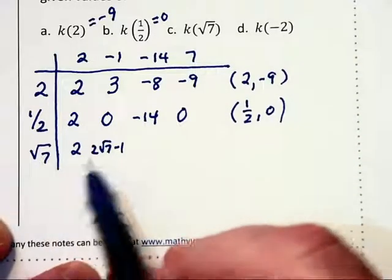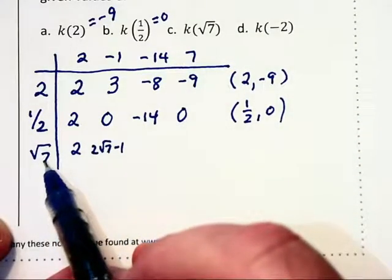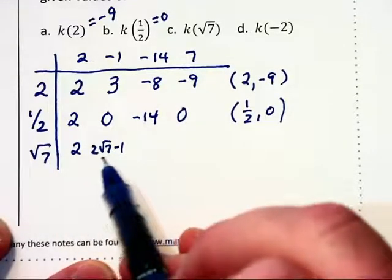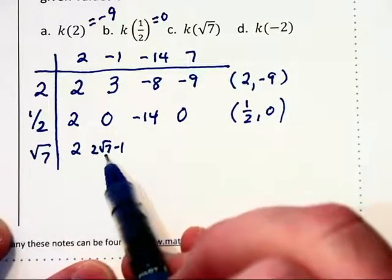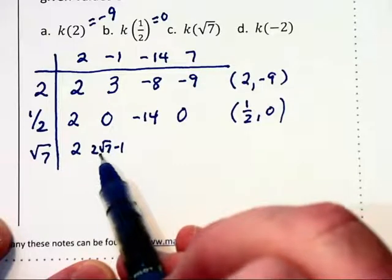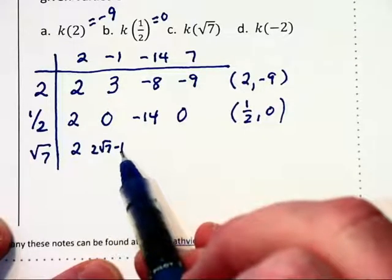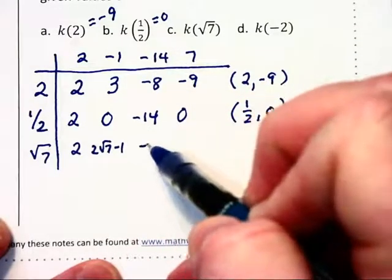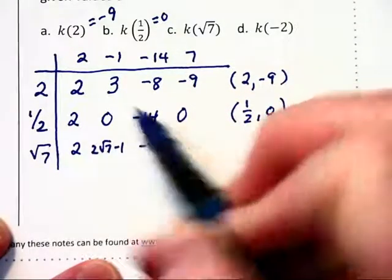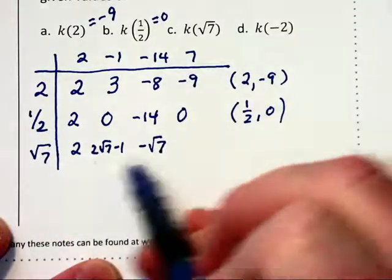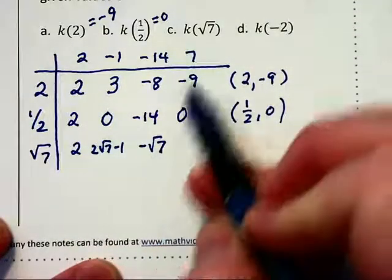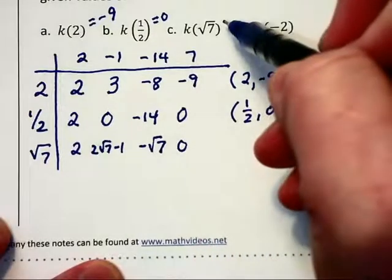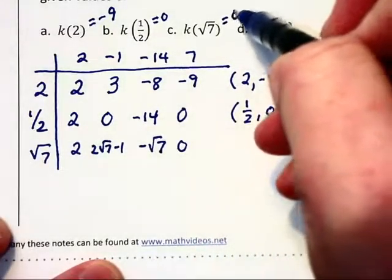Then we've got to go 2 times root 7, times 2 root 7 minus 1. Well root 7 times 2 root 7 becomes 2 root 49, which is 2 times 7, that's 14 minus root 7 minus another 14, giving us negative root 7. Negative root 7 times positive root 7 is negative 7 plus the 7 at the top there is 0. So again we've got another 0 of that function.